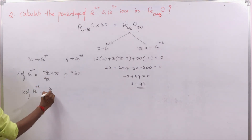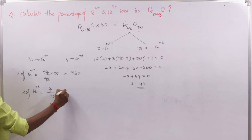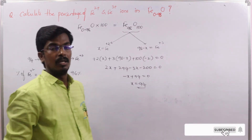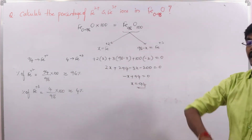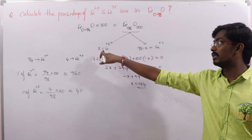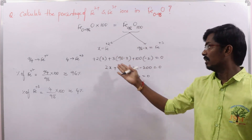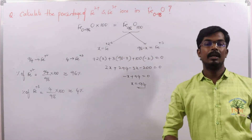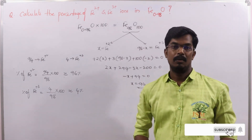Percentage of Fe³⁺ = (4/98) × 100 ≈ 4%. So the method is: bring the non-stoichiometric ratio to a whole-number stoichiometric ratio, assume x atoms in the lower oxidation state and the remainder in the higher state, then use oxidation number balance to calculate x and determine the percentage of Fe²⁺ and Fe³⁺.